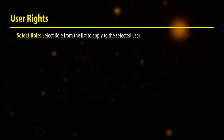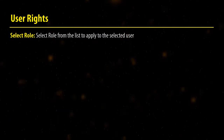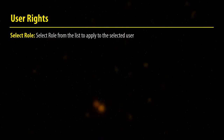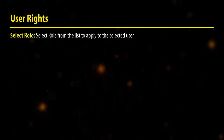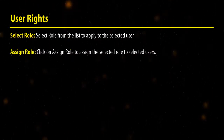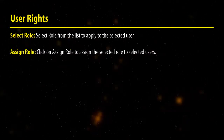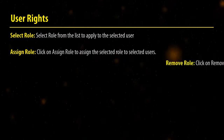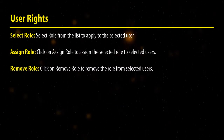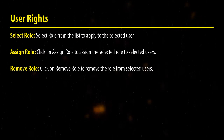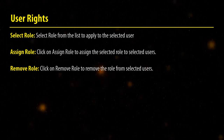User Rights summary: Select Role — select a role from the list to apply to the selected user. Assign Role — click on Assign Role to assign the selected role to selected users. Remove Role — click on Remove Role to remove the role from selected users.